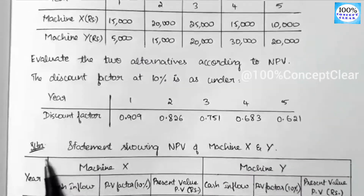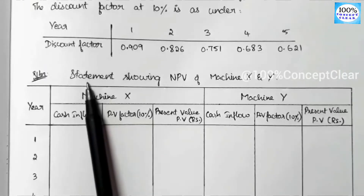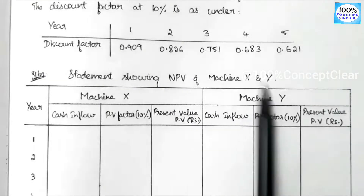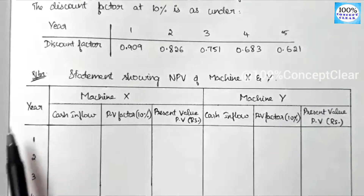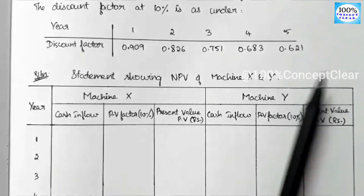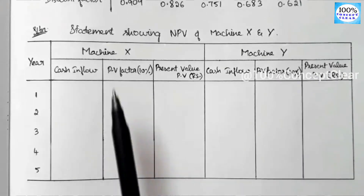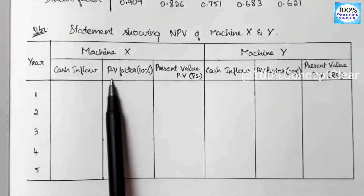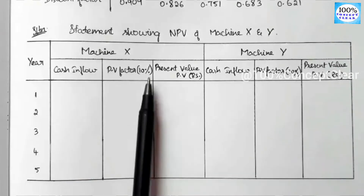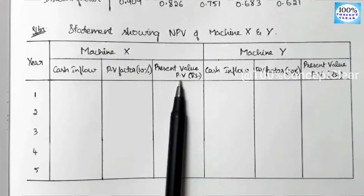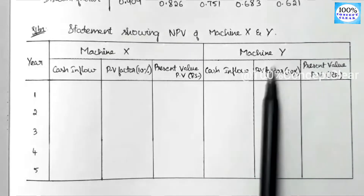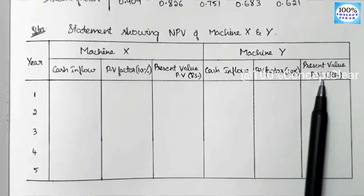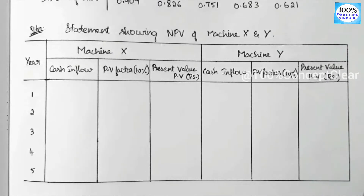Now we set up the solution: a statement showing net present value of machine X and machine Y. Columns include: years (5 years total), Machine X cash inflows, PV factor at 10%, and present value; then Machine Y cash inflows, PV factor, and present value.